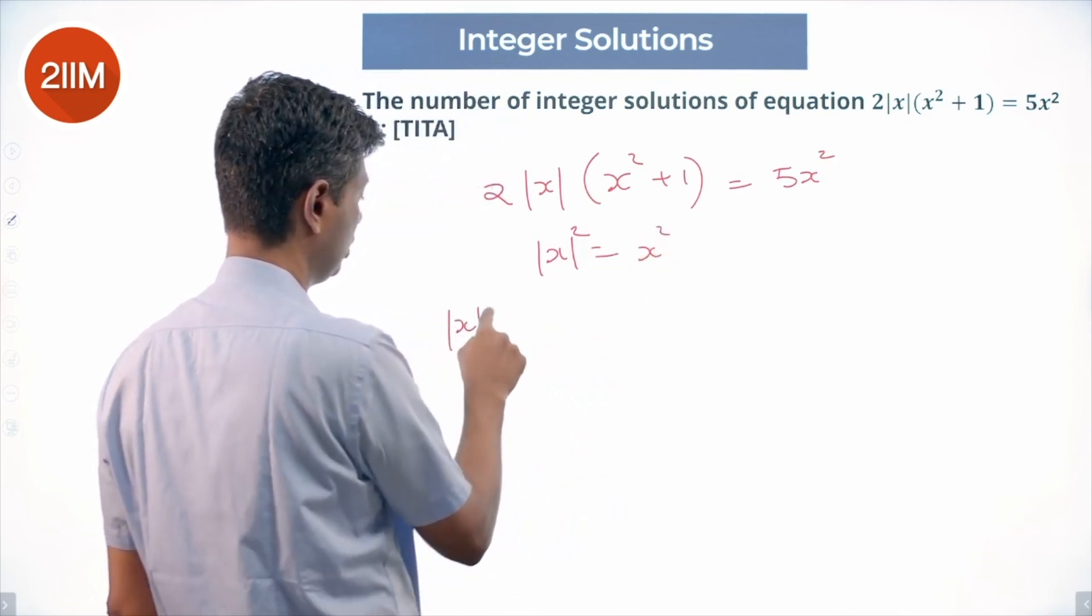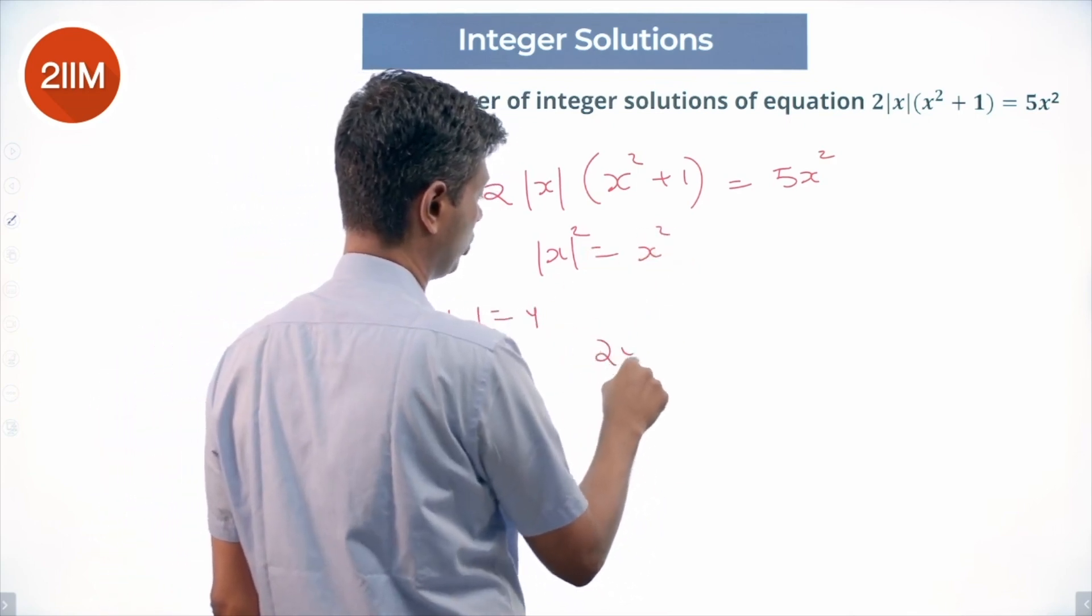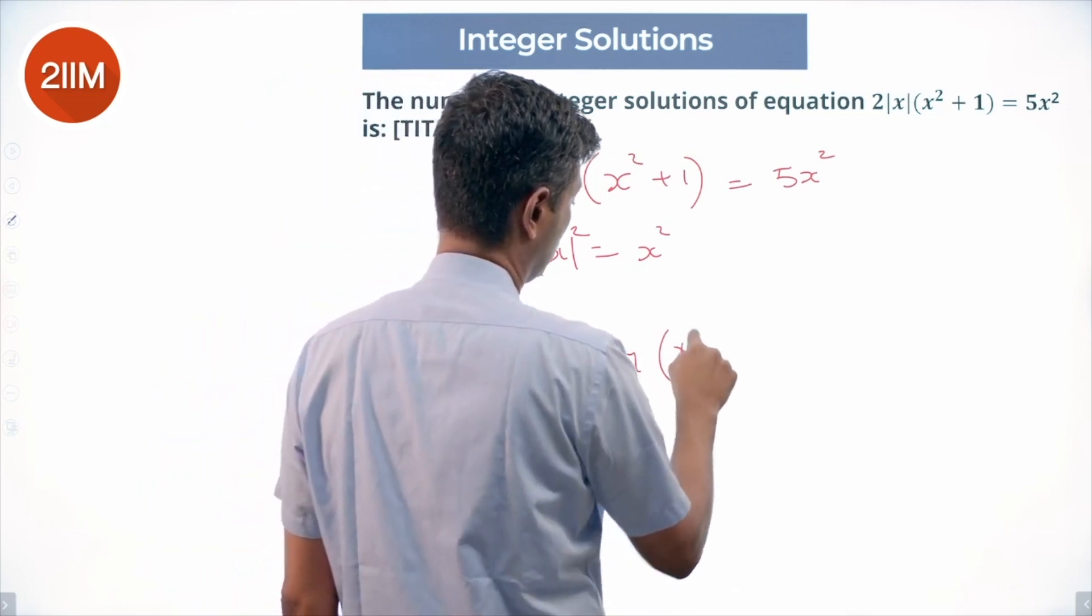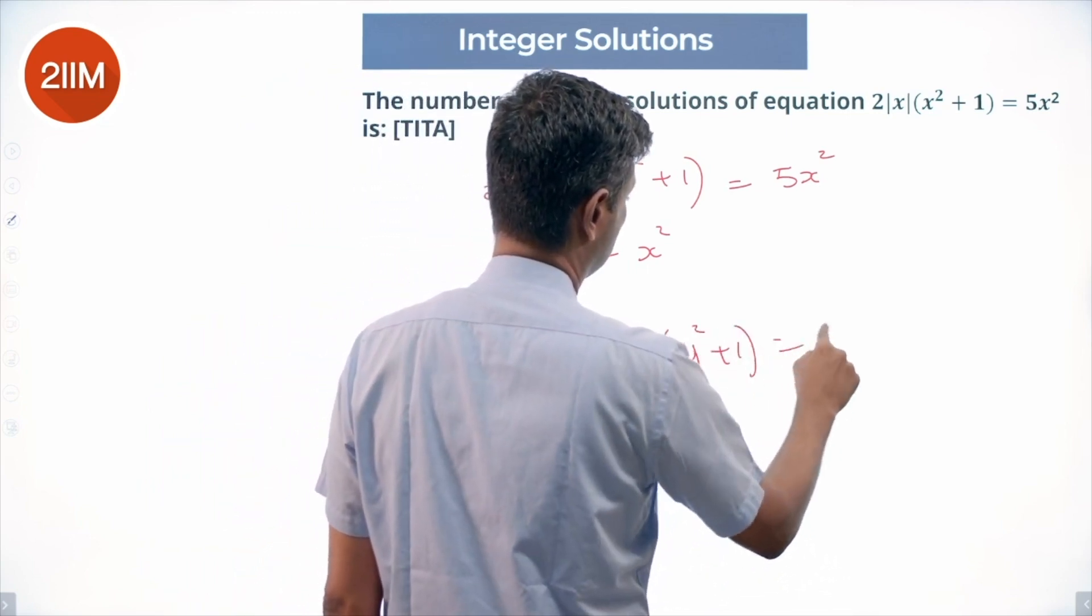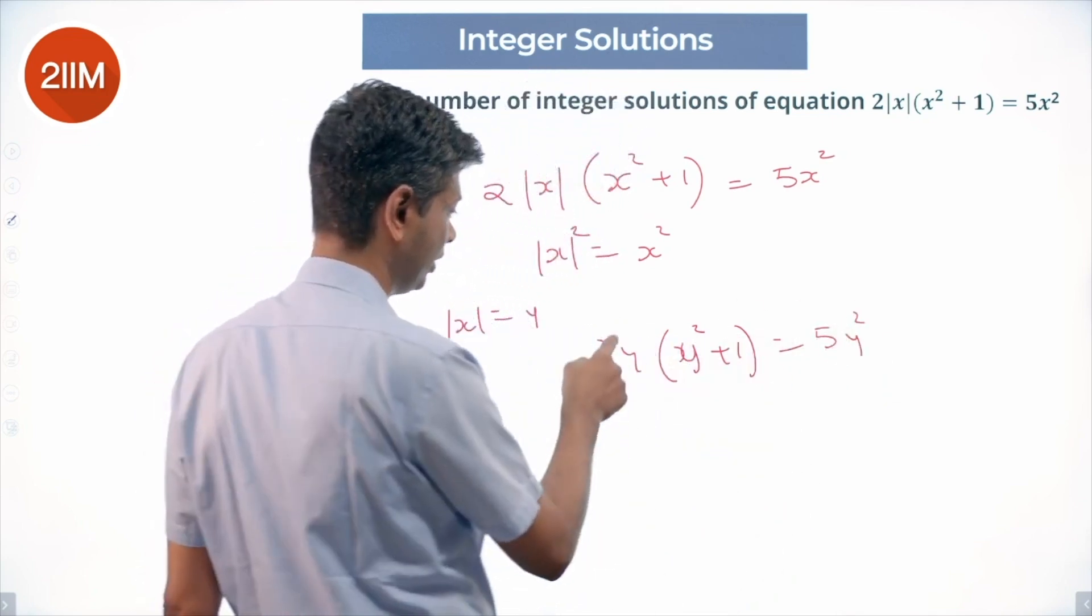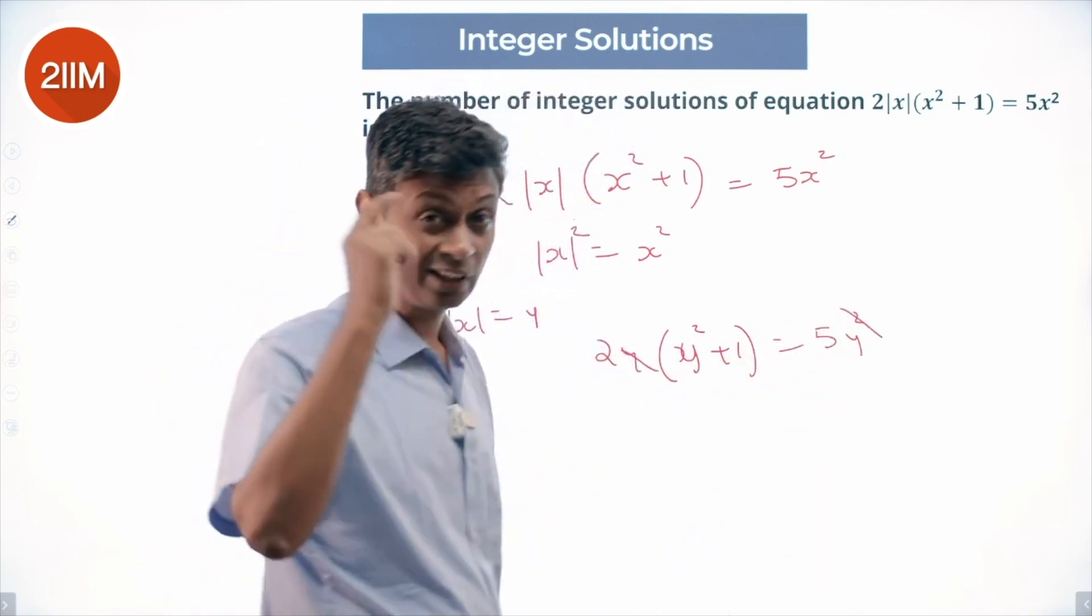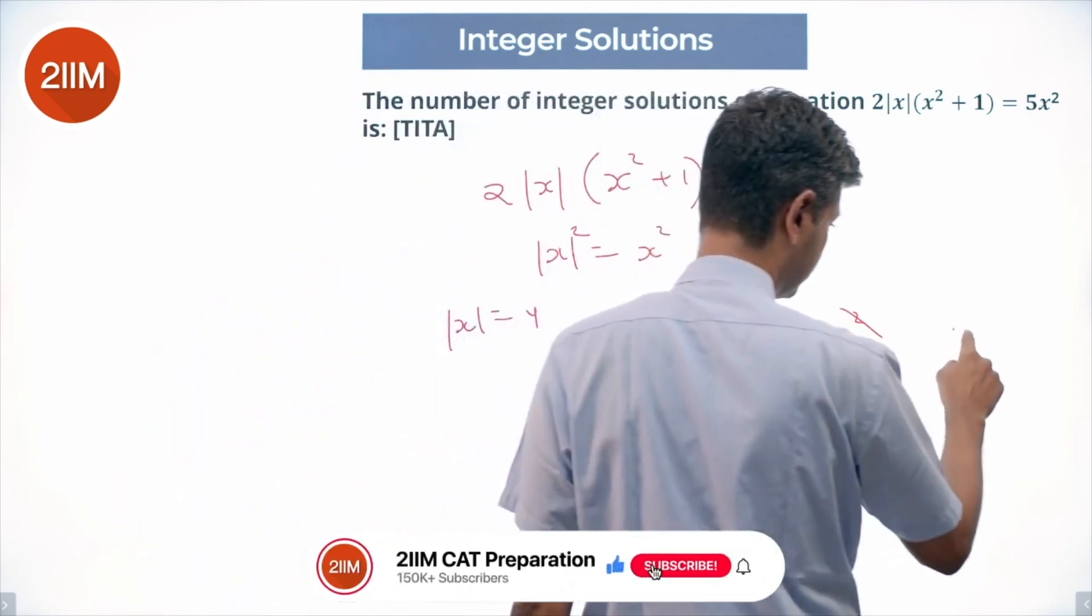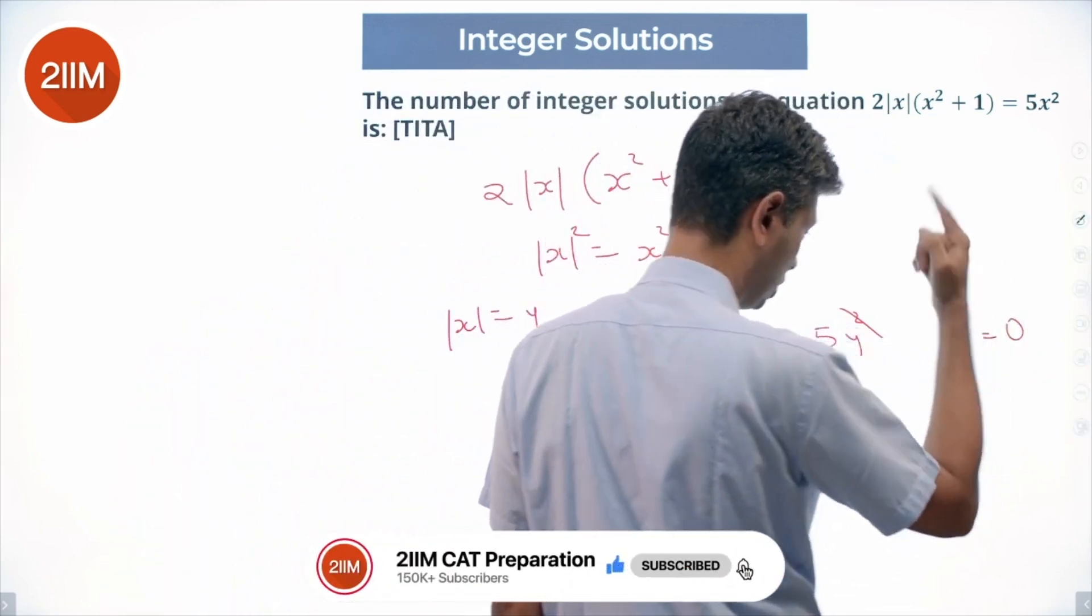So if we say |x| equals y, 2y(y² + 1) equals 5y². I can cancel a y, keeping in mind that y could be 0. Zero works.